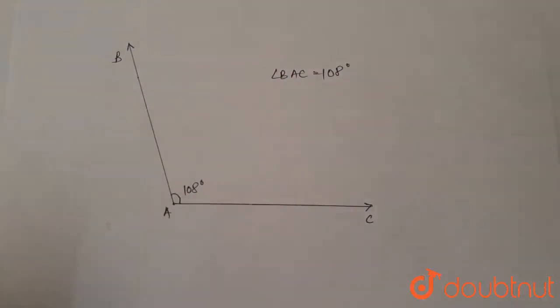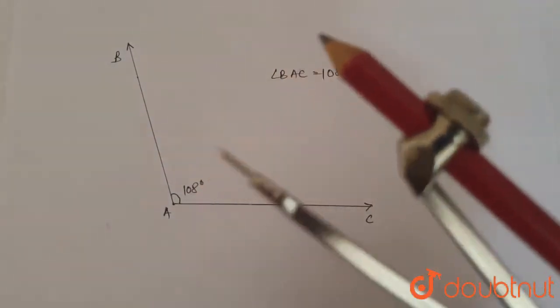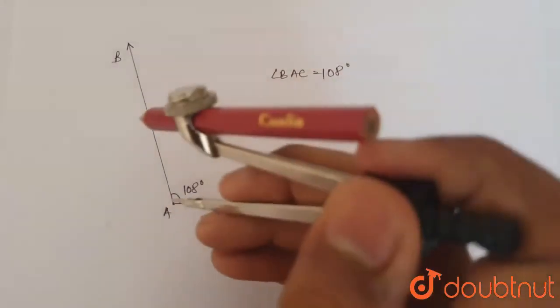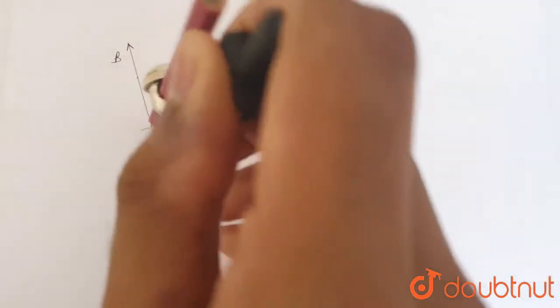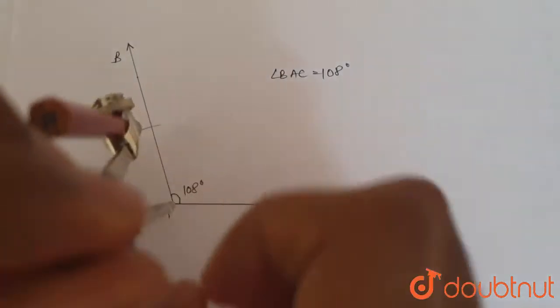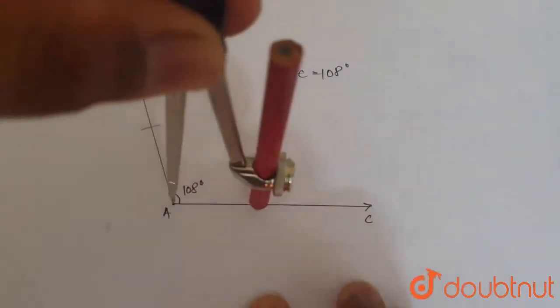Now, to make an angle of 54 degrees, we bisect this angle by using a compass. So we take a random distance on the compass and make two arcs on both the sides of the angle.